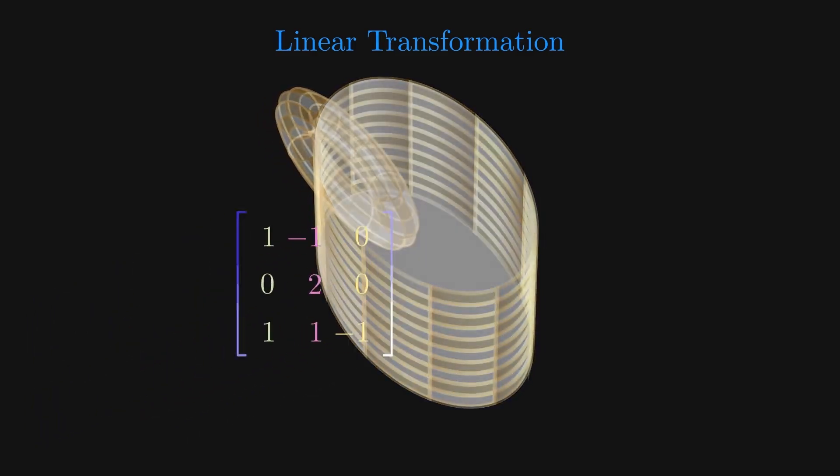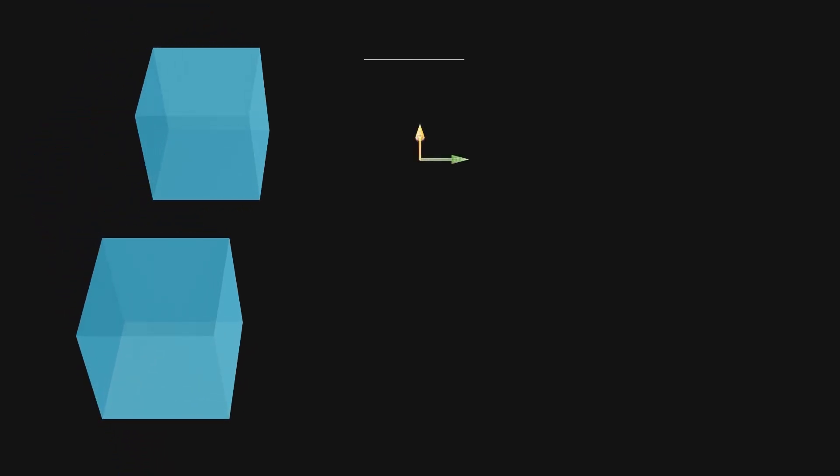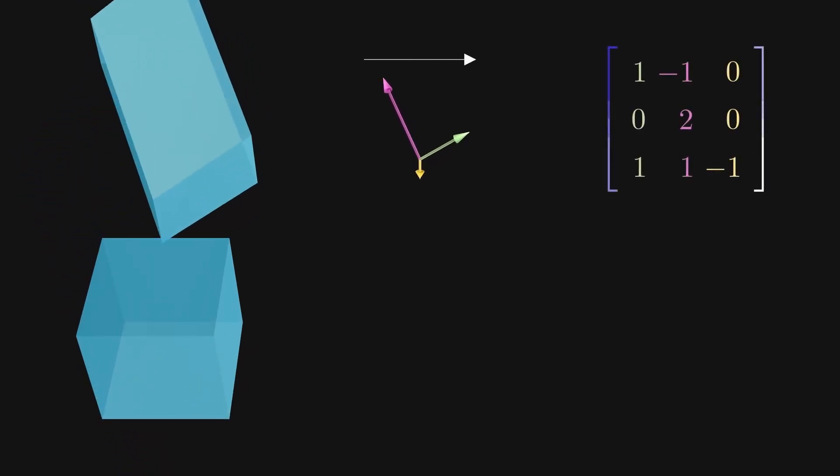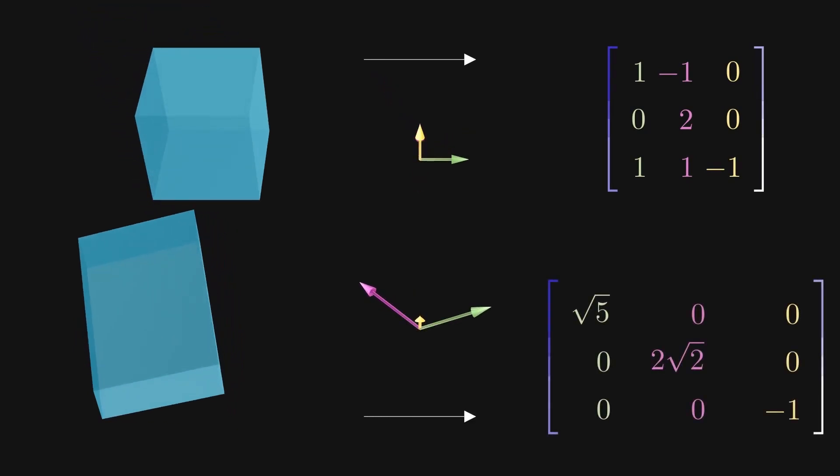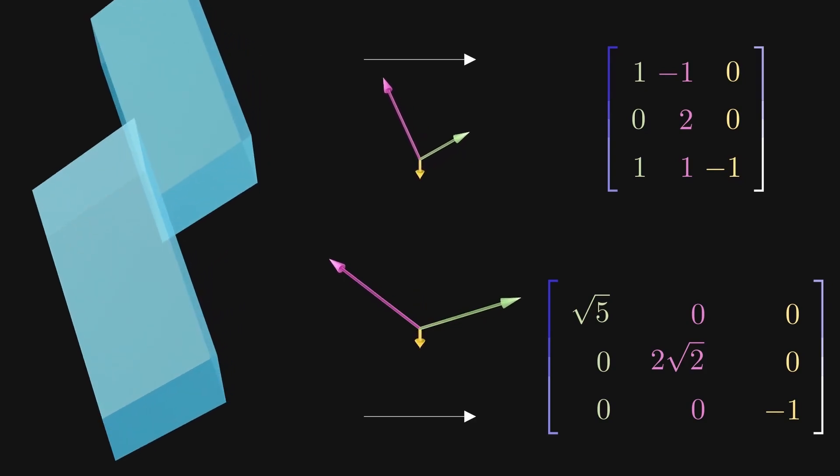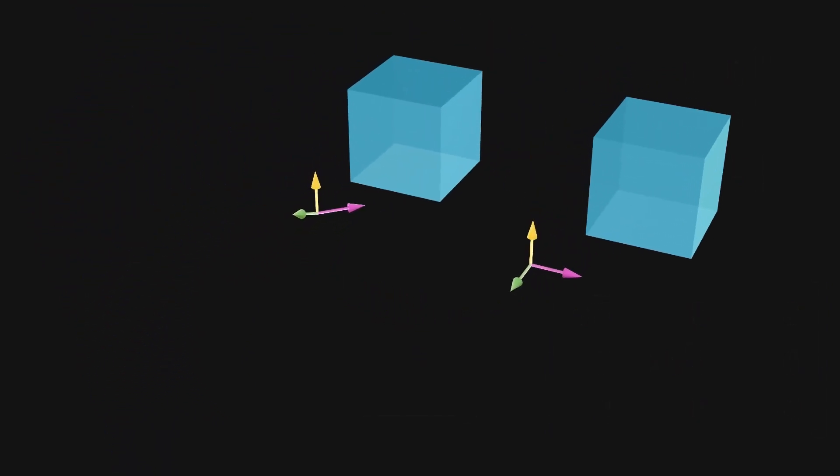The tricky thing about linear transformations is that the same transformation of 3D space could have different matrix representations. Earlier we said that the three columns of the transformation corresponded to where you sent the x, y, and z unit vectors. But the big idea of diagonalization is that you can instead describe where different basis vectors go.